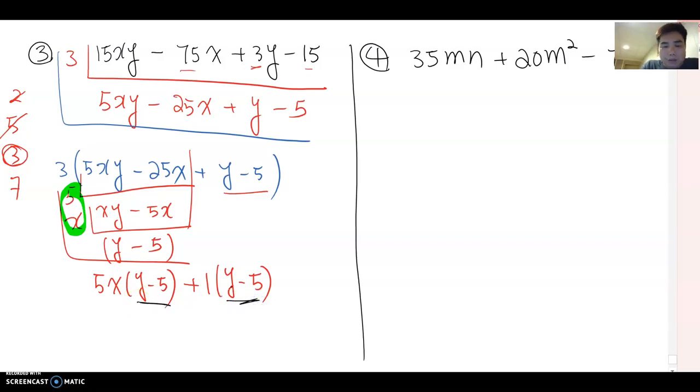And do you see a common factor again? Yes, you must see y minus 5 here and y minus 5 there will be the common factor. Therefore this becomes y minus 5 times 5x plus 1. But don't forget we factored by three before, so you put three outside. Then three times y minus 5 times 5x plus 1 will be the answer for this problem.